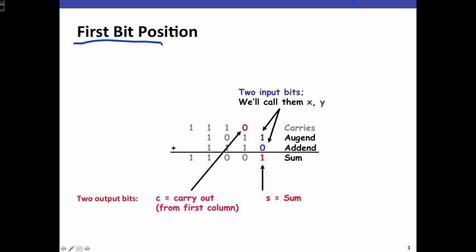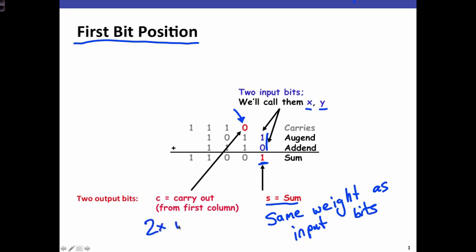If we look at the first bit position, we have only two input bits, because there's no carry into the first bit position, and we'll call these two inputs x and y. It doesn't really matter which is which, because both these bits have the same weight. We're going to use these two inputs to produce our two outputs, the sum bit and the carry bit. The sum bit has the same weight as the two input bits, whereas the carry bit has two times the weight of the input bits and the sum bits.